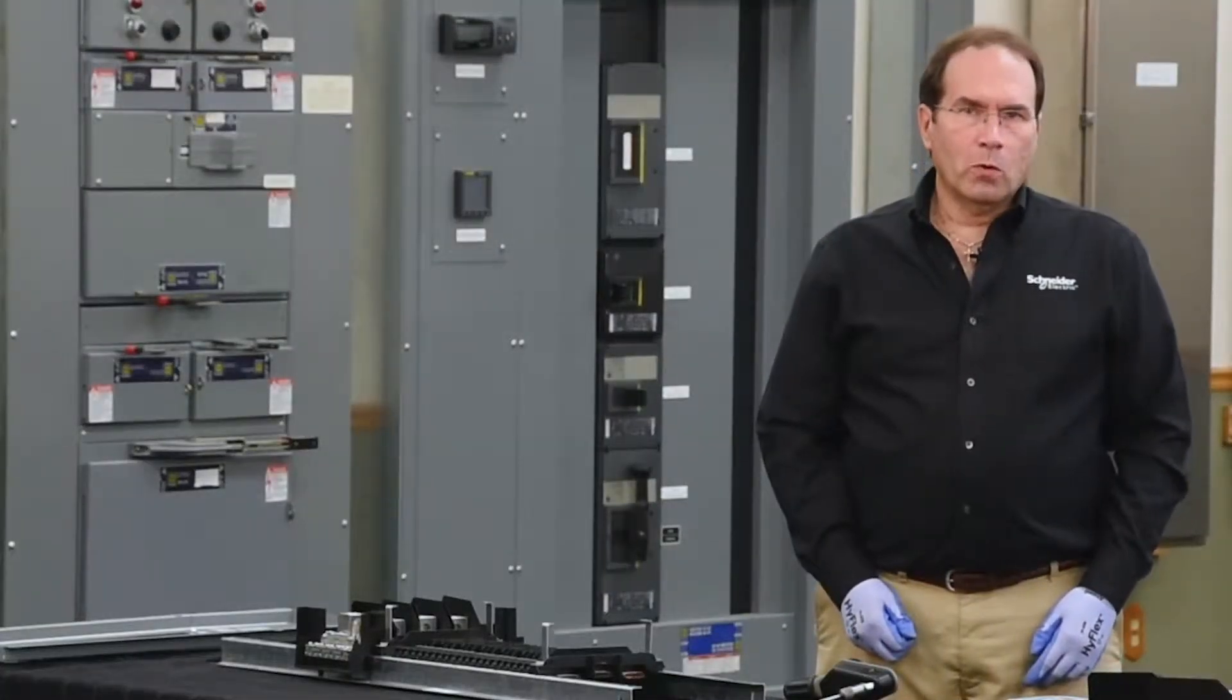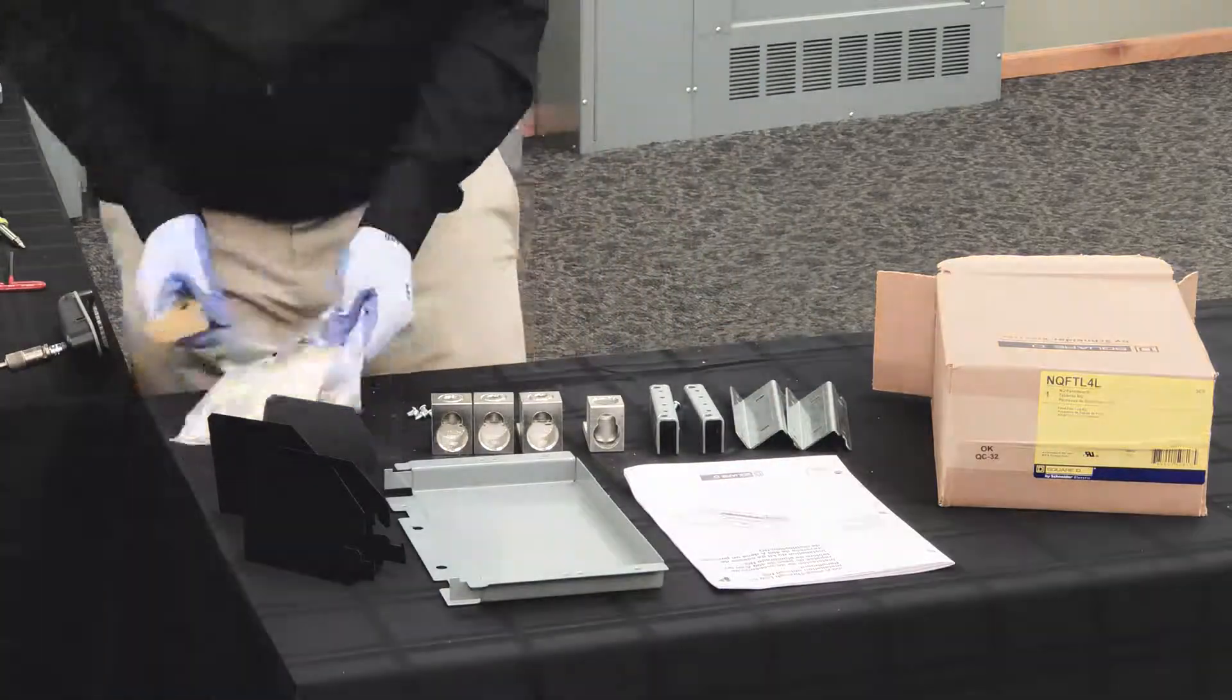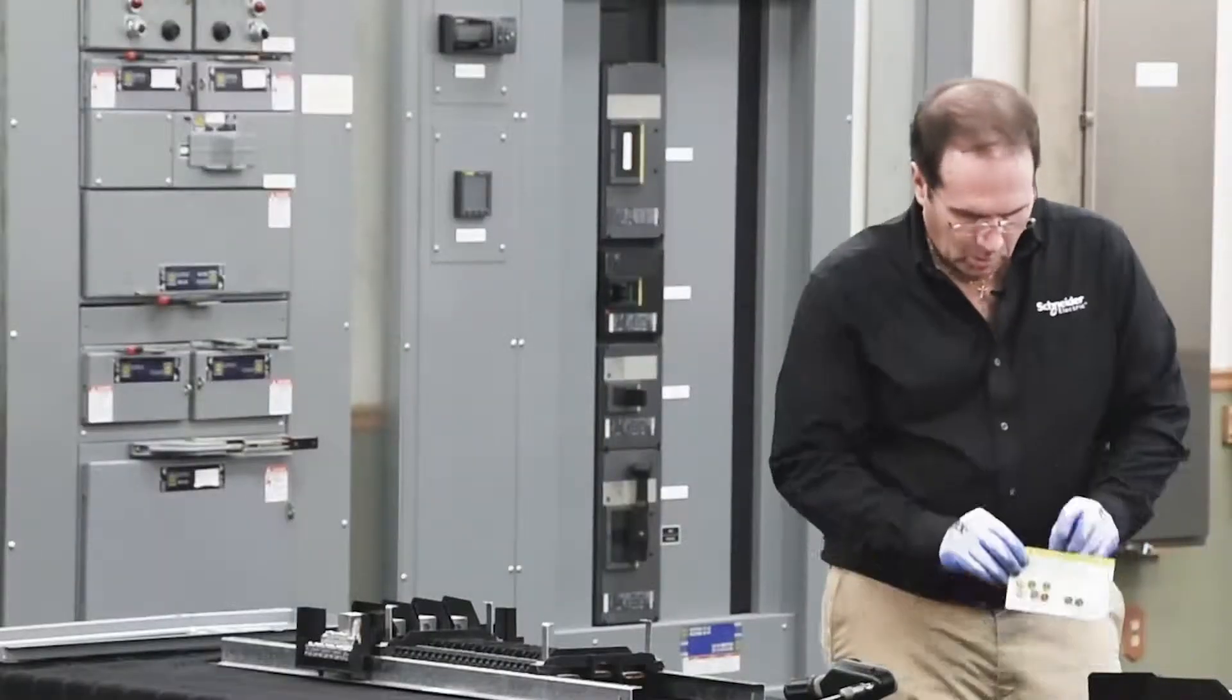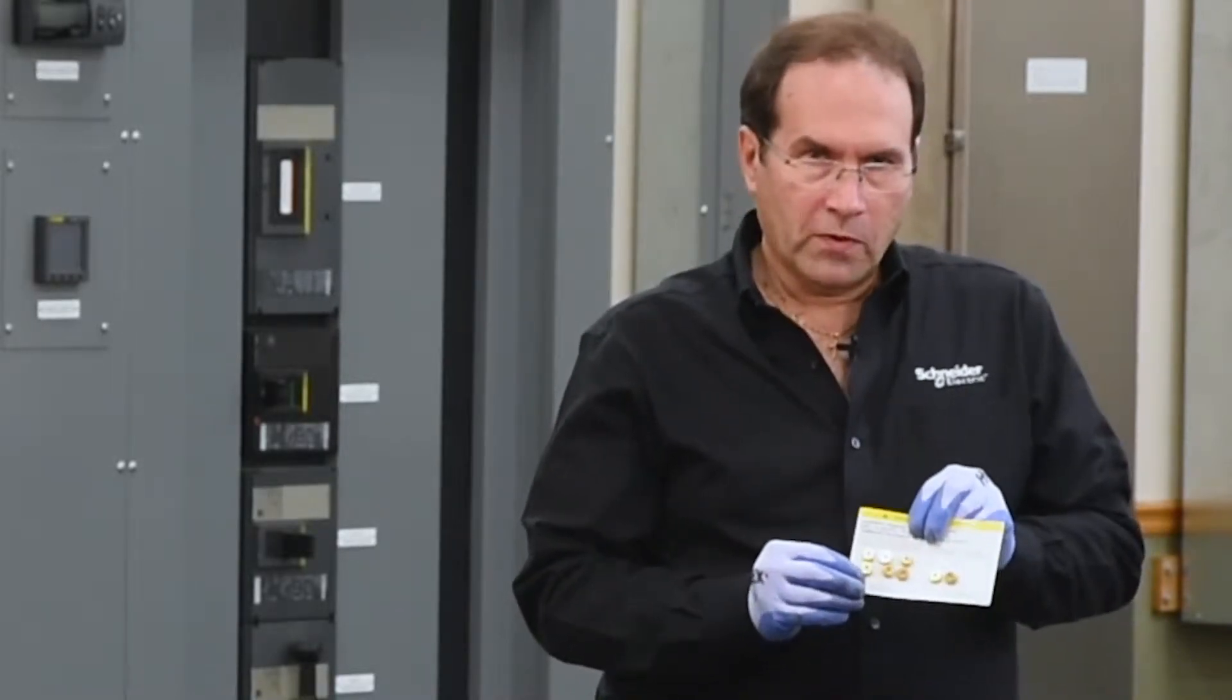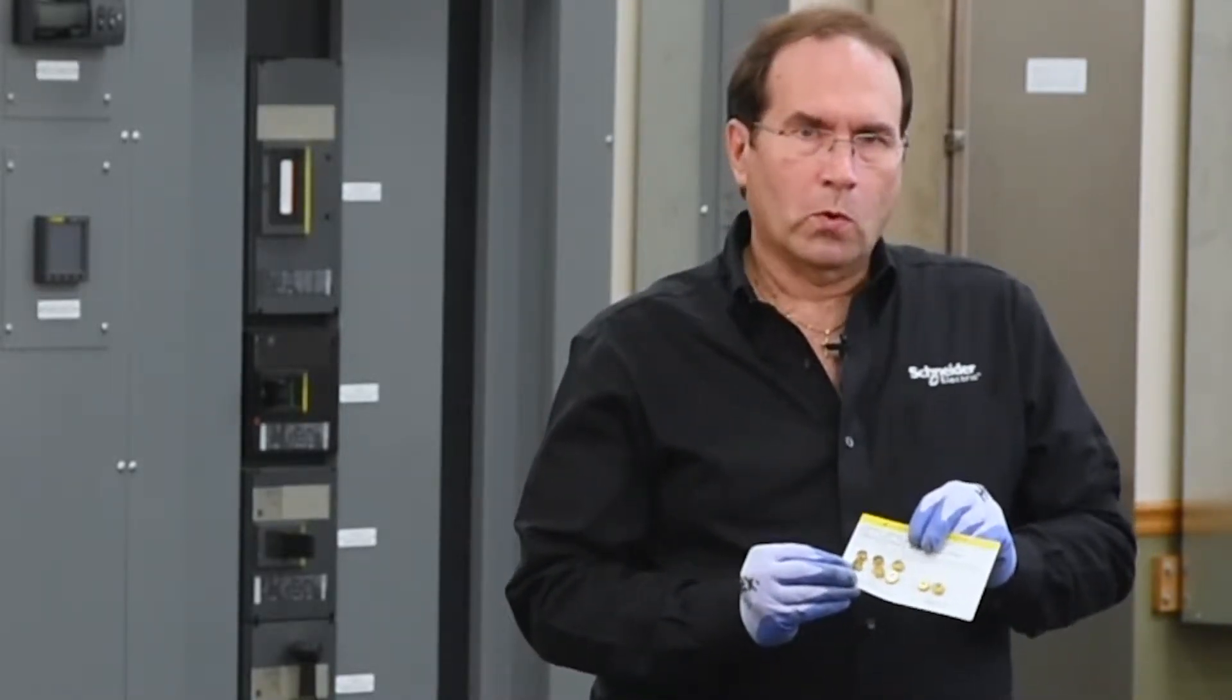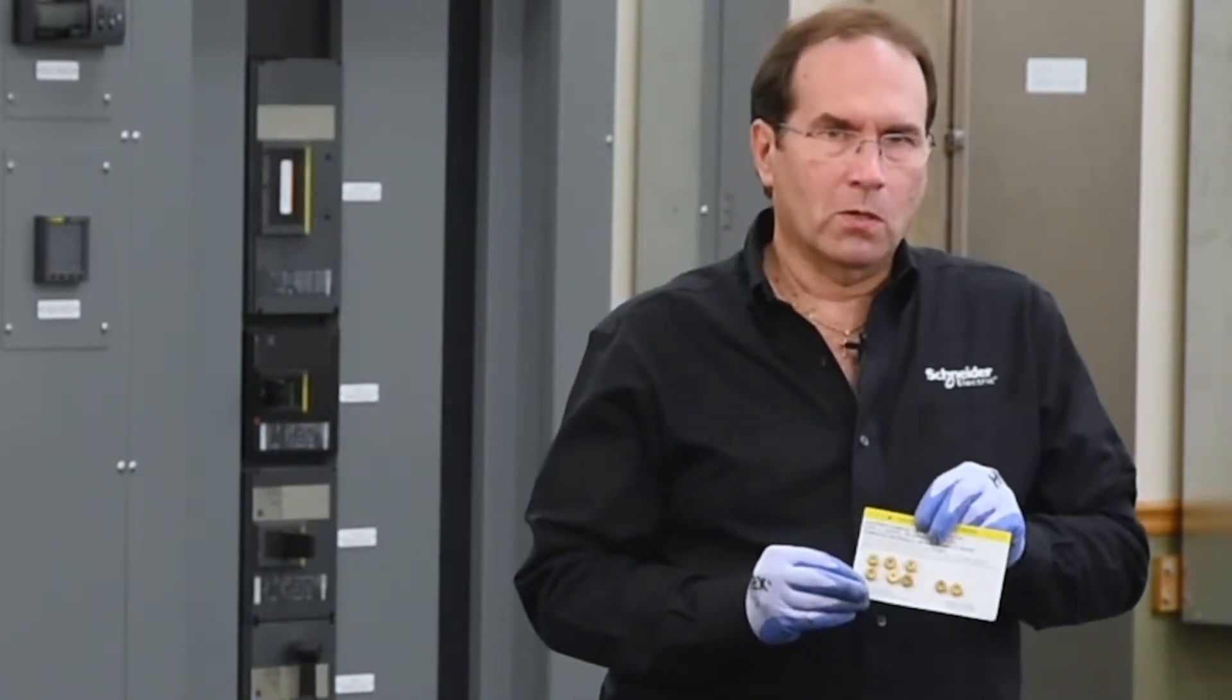The first step is to open the hardware bag assembly to access the hardware. The hardware card contains six screws—two for each face and two screws for the additional neutral lug. The torque requirements for each connection are also contained on this card.